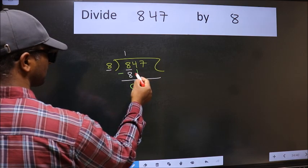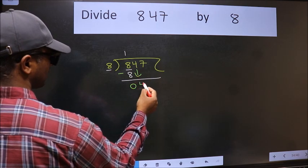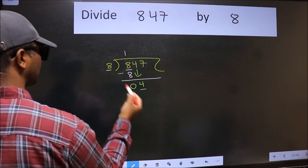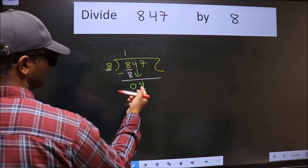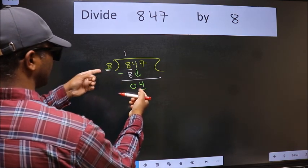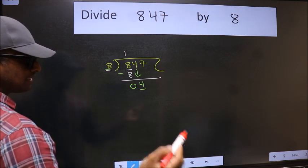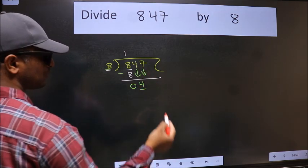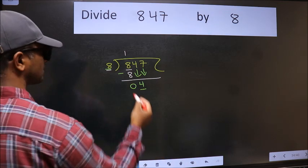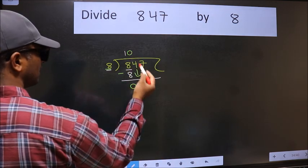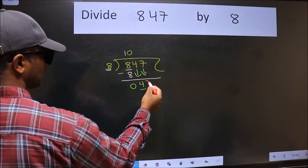After this bring down the beside number. 4 down. Now here we have 4 and here 8. 4 is smaller than 8. So we should bring down the second number. And the rule to bring down second number is we should put 0 here. Then only we can bring this number down.